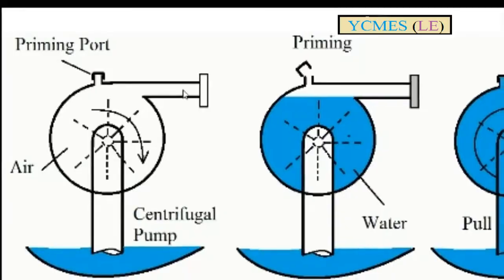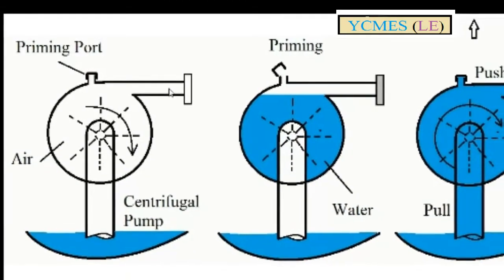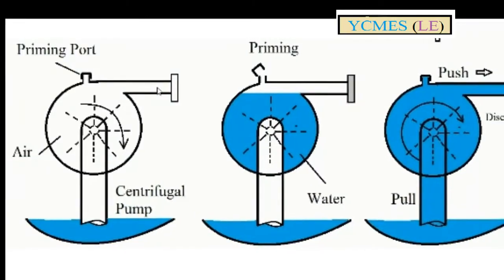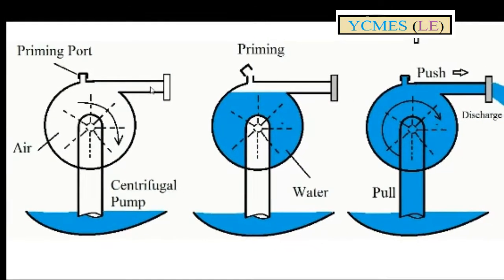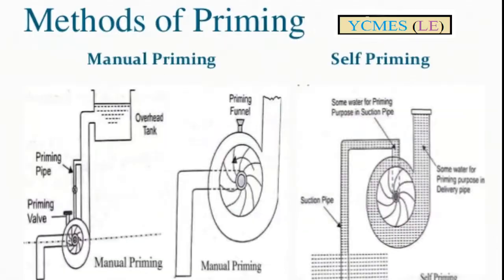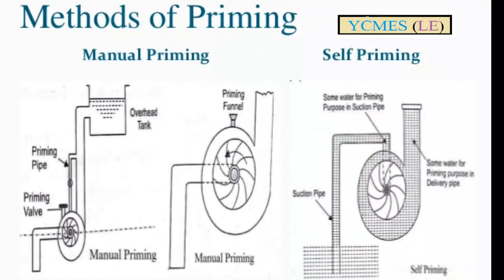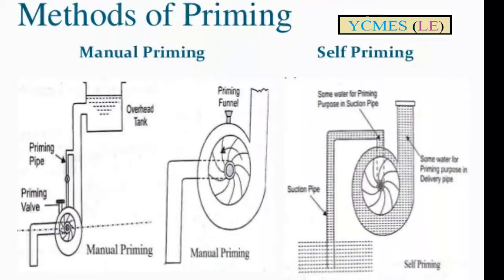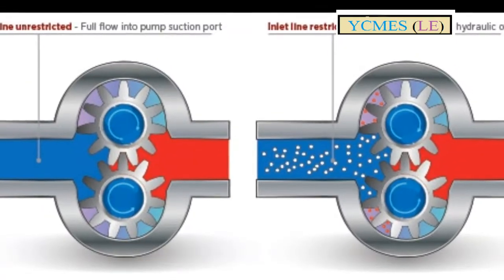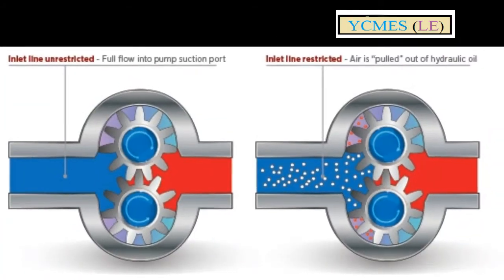When we start a new pump, we need to do priming first. The reason is that the casing and suction pipe may contain air. The air must be removed, and water must be poured into the pipeline so the pump can discharge water properly.